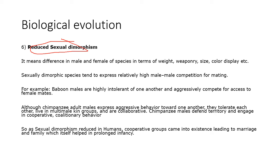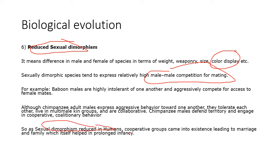Reduced sexual dimorphism means that males and females of the human species are less different in size and appearance compared to gorillas or peacocks. In species with high dimorphism, there is intense male-male competition for mating. In humans, reduced dimorphism allowed cooperative groups to form, leading to marriage and family — since in chimpanzees, males fight even their fathers and brothers for mating opportunities, making stable family structures impossible.